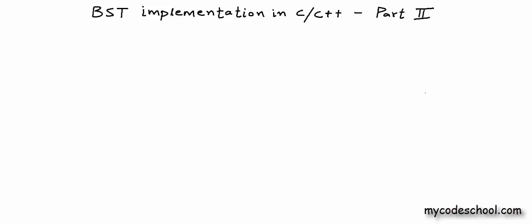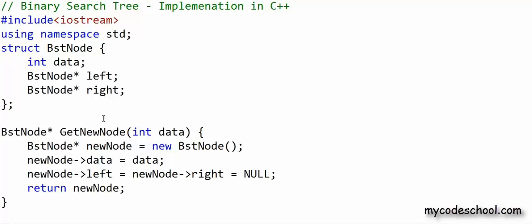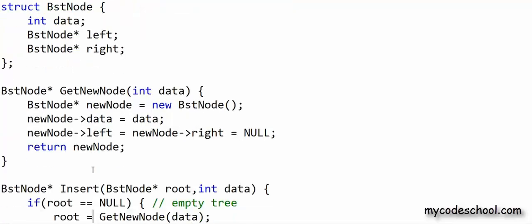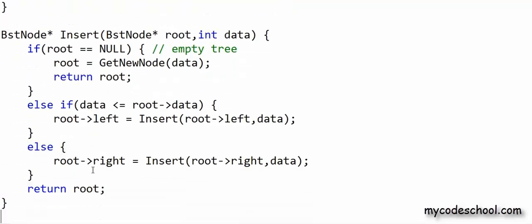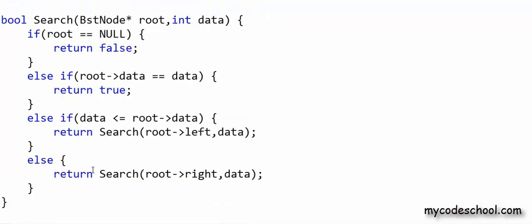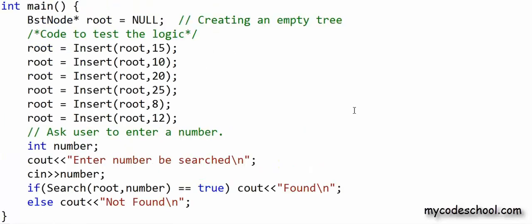The concepts I am going to talk about in this lesson have been discussed earlier in some of our previous lessons, but it will be good to go through them again when we are implementing trees. Here is the code that we had written. We have the function get_new_node to create a new node in dynamic memory, the function insert to insert a new node in the tree, a function to search data in the tree, and finally the main function. You can check the description of this video for a link to this source code.